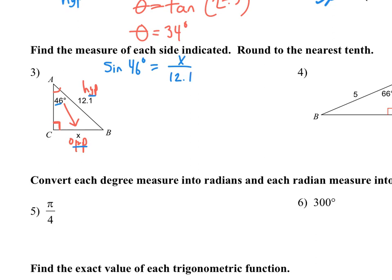The way we are going to get x by itself, since it's being divided by 12.1, we will just multiply both sides by 12.1. Make sure you're in degree mode — always double check that because it will definitely throw things off. I'm getting — they want it rounded to the nearest tenth — so x equals 8.74.